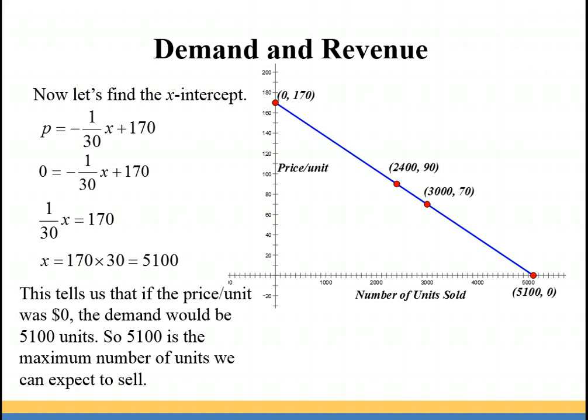So now instead of having a line that goes on forever, we've limited the domain of this equation. The domain is going to go from zero to 5100, it doesn't make sense to have a negative number of textbooks. And the range is going to go from zero to the maximum possible price per unit, which is at 170. It doesn't make sense to go negative for your price per unit. So we have a range of zero to 170.